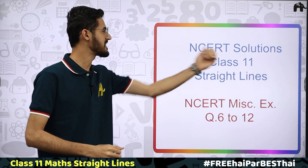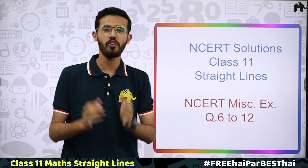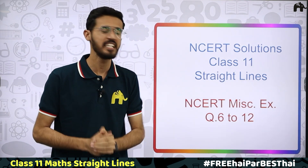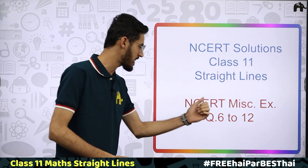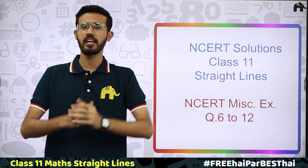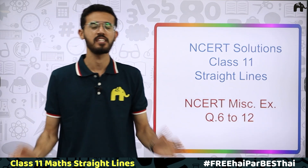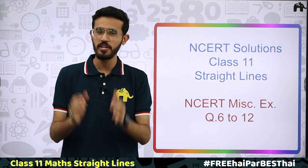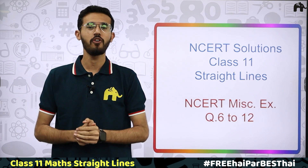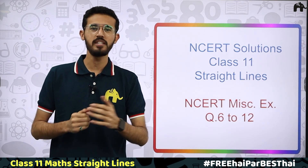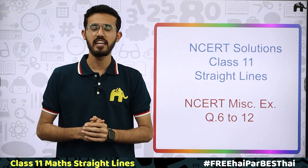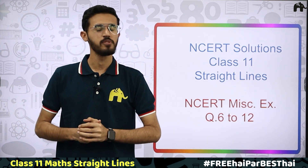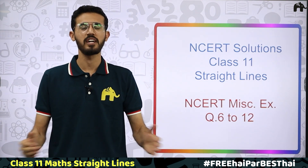So today we will see NCERT Solutions of Class 11, Chapter Straight Lines. We will cover the Miscellaneous Exercise Questions 6 through 12 in detail. I hope you will watch this chapter's video and all your doubts will become crystal clear. So let's start without wasting any time.